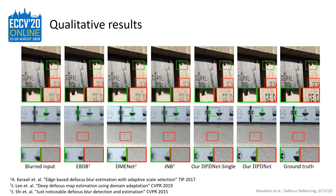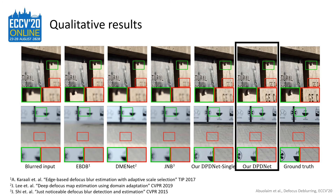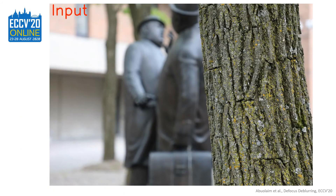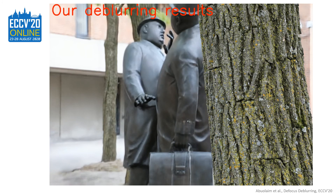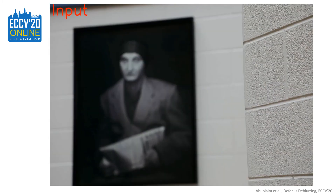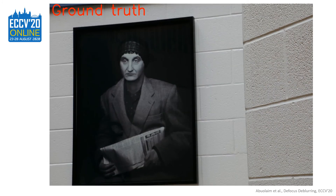Here we present qualitative comparisons of different deblurring methods. We also present zoomed-in cropped patches in green and red boxes. Our DP-DNet method significantly outperforms other methods in terms of deblurring quality compared to the ground truth in the last column. Here we also show animated examples of our deblurring results.